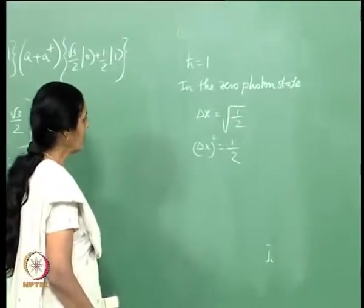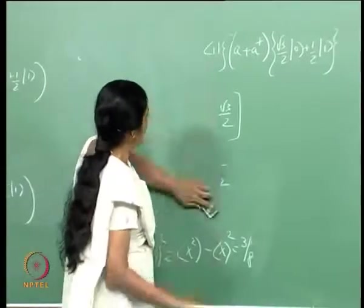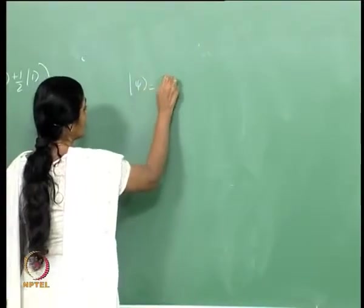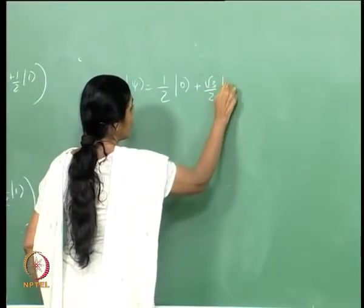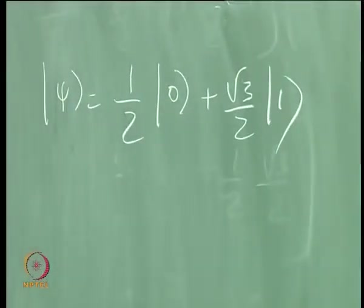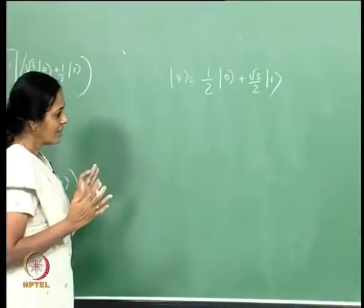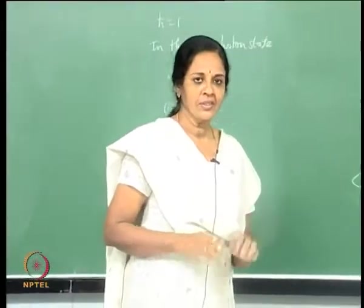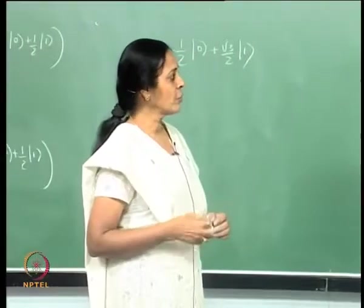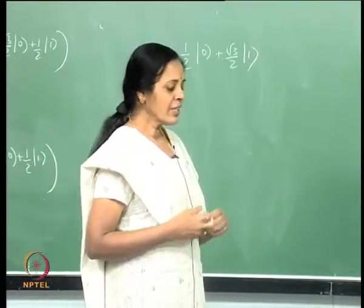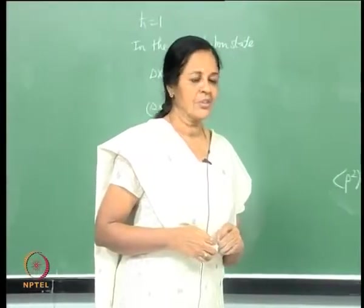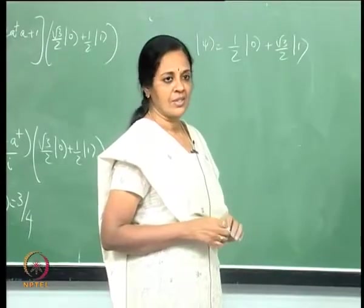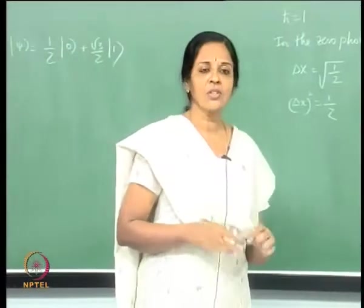It is clear I could have changed the coefficients. If I constructed a state which is half ket 0 + √3/2 ket 1, it will be squeezed in the p quadrature and not squeezed in the x quadrature. So this is the power of quantum superposition. I have constructed a state which shows squeezing, and squeezed states are very important in optics. The squeezed vacuum is a very important non-classical state. There is no analog of squeezing in classical physics, and there is no analog of the uncertainty principle in classical physics either. Therefore, a squeezed state is an example of a non-classical state.